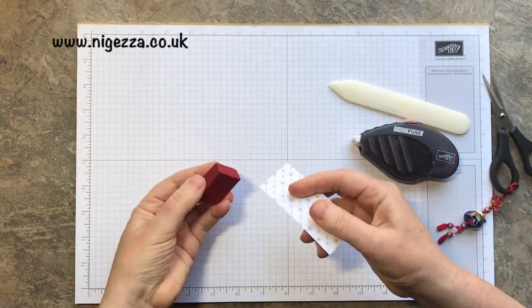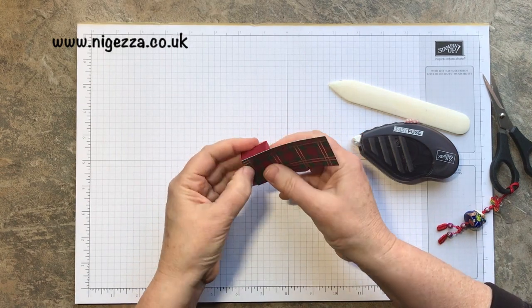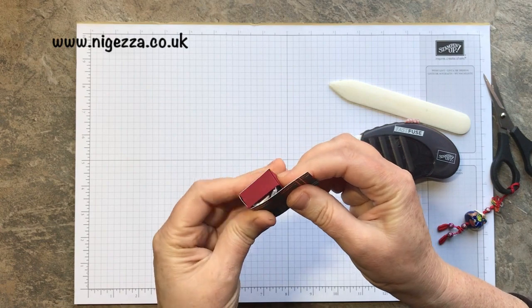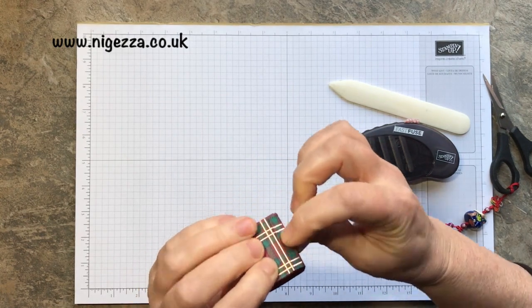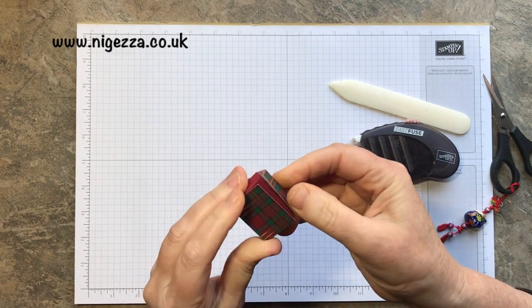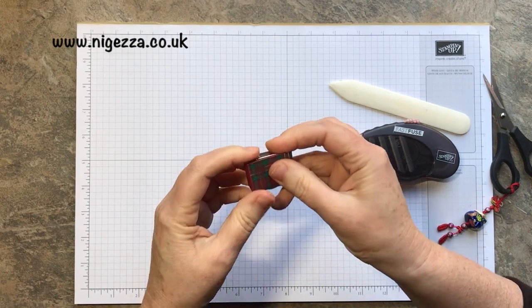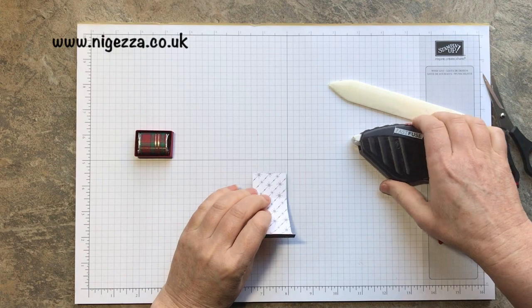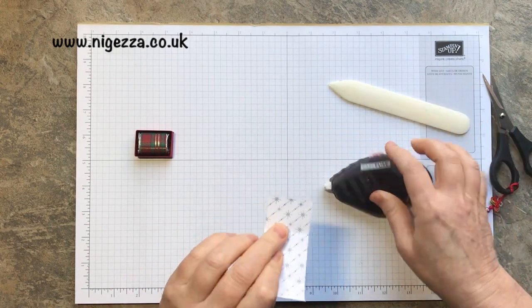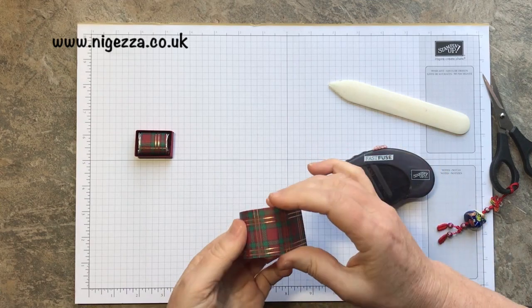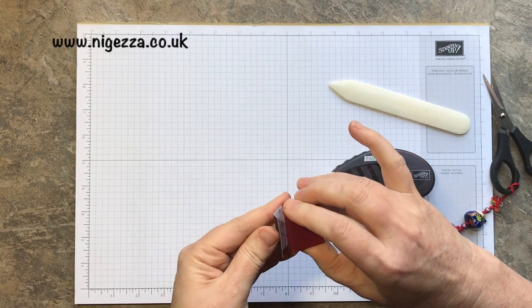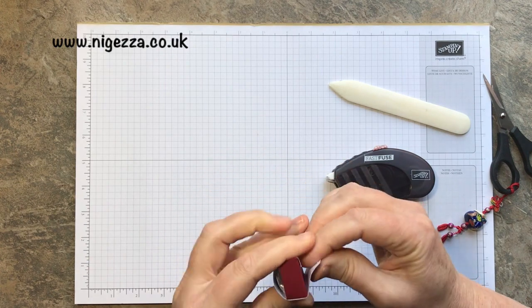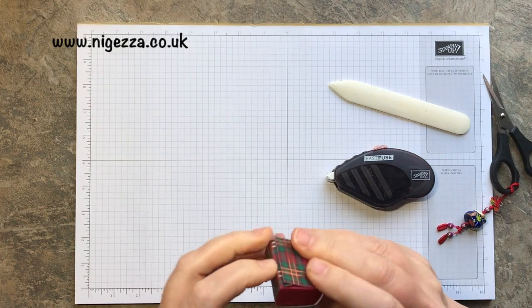I lined it up so it was straight, then got it going around and creasing at the bottom. You can make it a little bit longer if you want. I've got it so it touches right on the edge. Put a little bit of Fast Fuse just on the edge, not too far down because we want it to slip out.